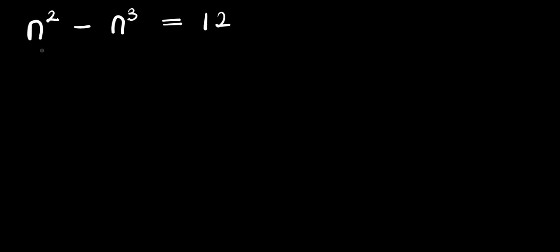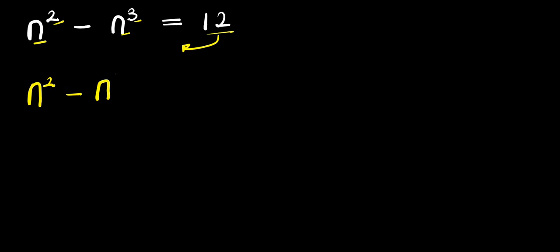Hello, how to solve this exponential problem. This is n power 2 minus n power 3 equals 12. So we can start by moving this 12 over here, so we have n power 2 minus n power 3, and this is minus 12.